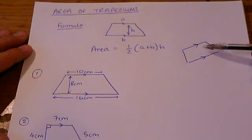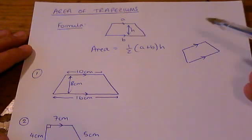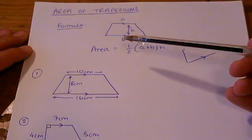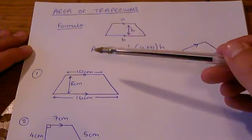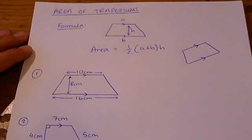Identifying those parallel sides is important because they form part of the formula to work out the area of a trapezium. Let's have a look at the formula as it's normally presented, and at the moment at the start of GCSE exams you get this formula given to you.